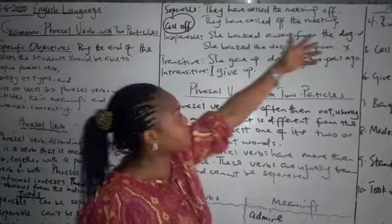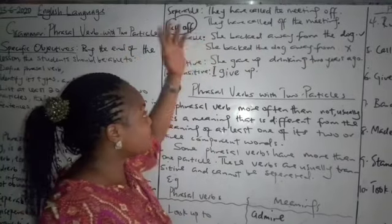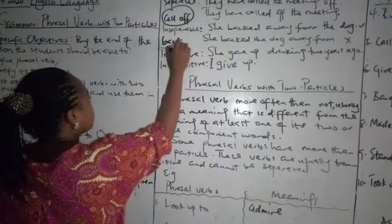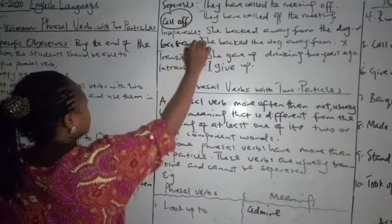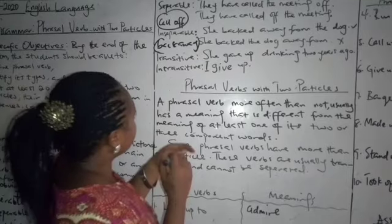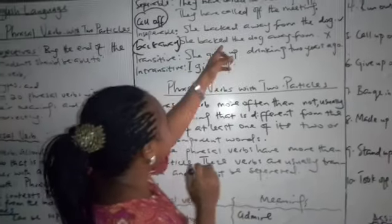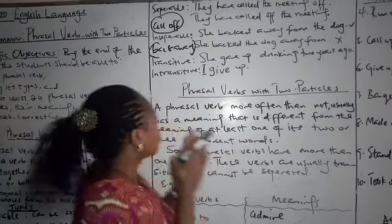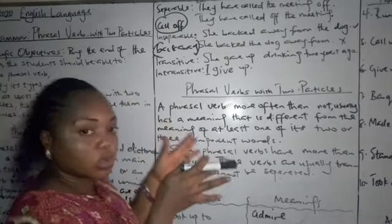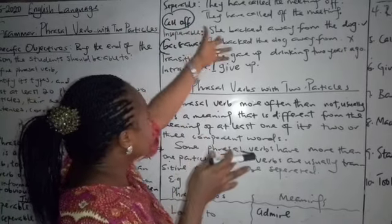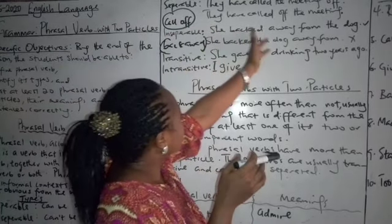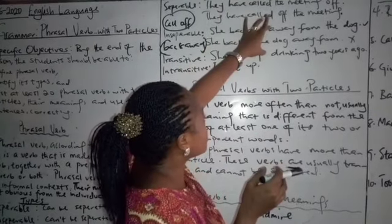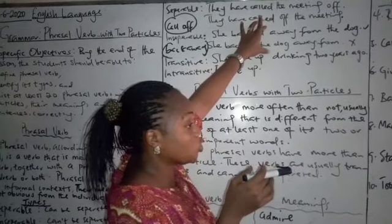In the first verb, she backed away from the dog. The phrasal verb here is back away. And then we have she backed. You cannot say she backed the dog away from. You cannot. So it is inseparable. Here it is used together. She backed away from the dog. Here you cannot separate. It depends on your usage.